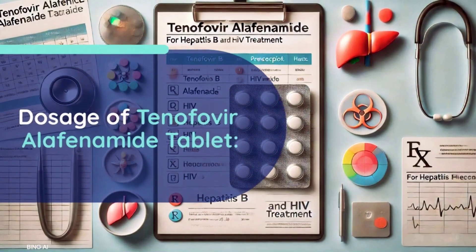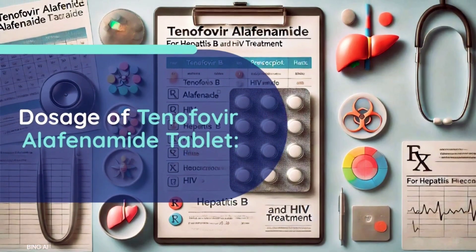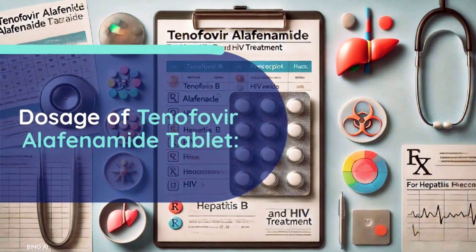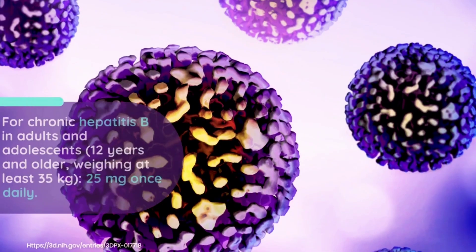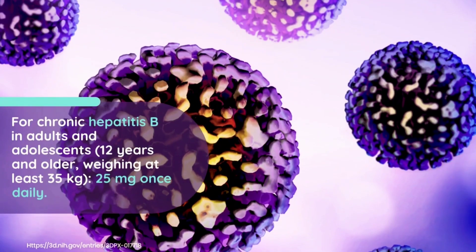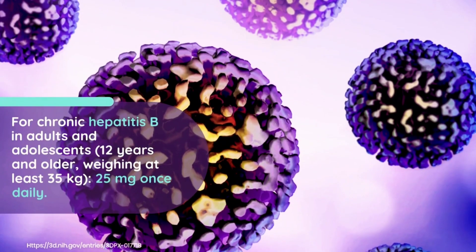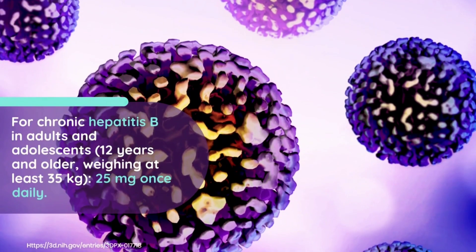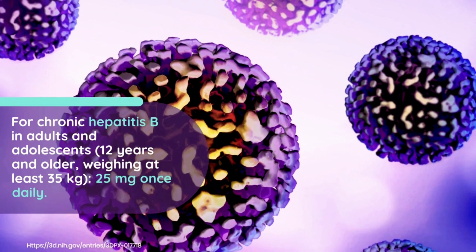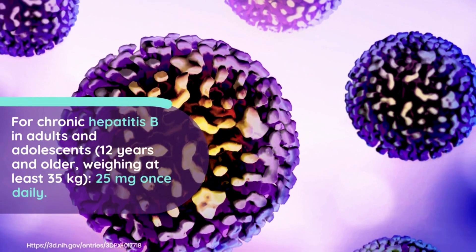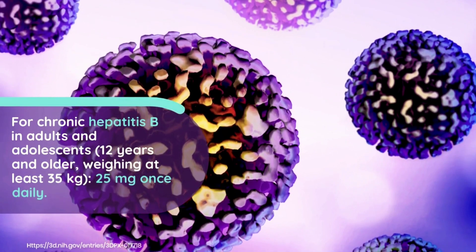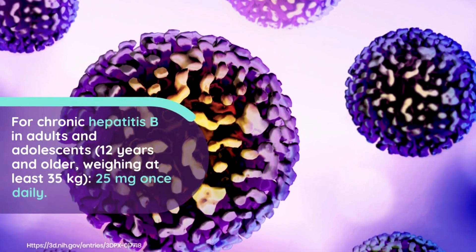Dosage of tenofovir alafenamide tablet. For chronic hepatitis B in adults and adolescents aged 12 years and older, weighing at least 35 kg, the typical dose is 25 mg once daily.